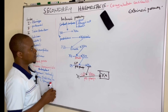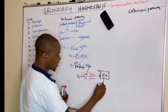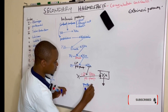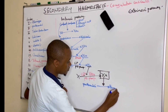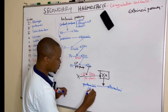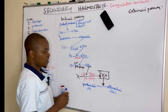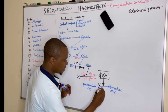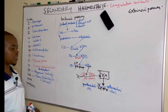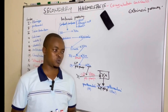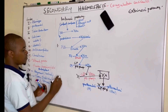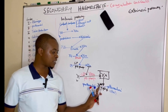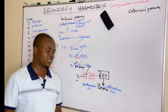Activated factor ten is the one that activates factor two, which is prothrombin. In the presence of activated factor ten, together with factor five, calcium, and platelet phospholipids, prothrombin is converted to thrombin. This is step number two: conversion of prothrombin to thrombin in the presence of activated factor ten, factor five, calcium, and platelet phospholipids.